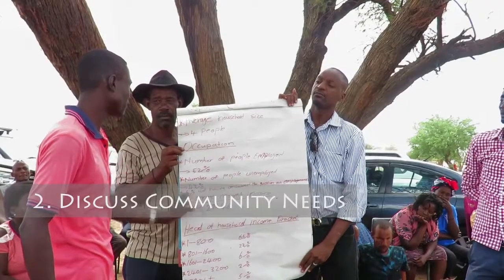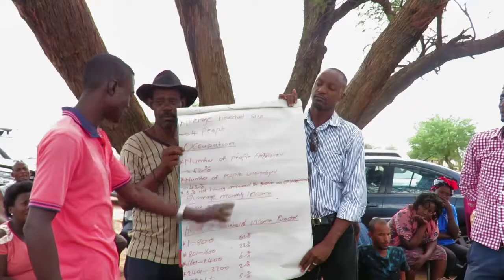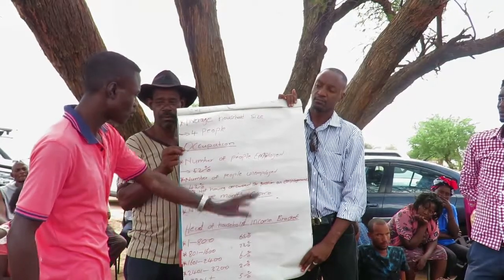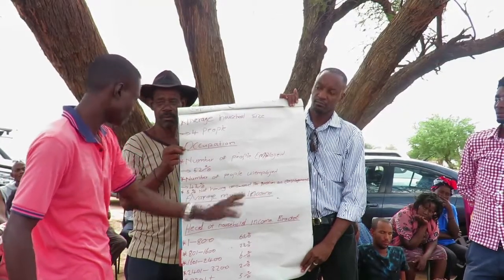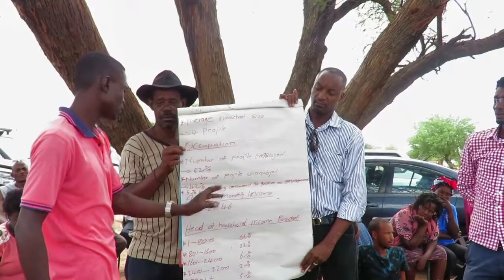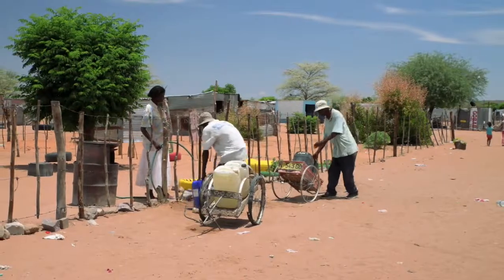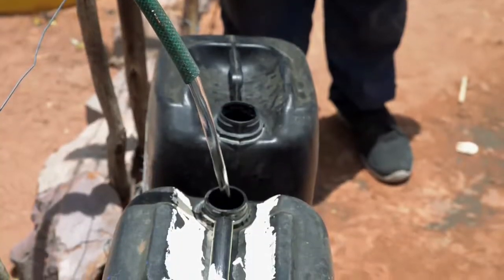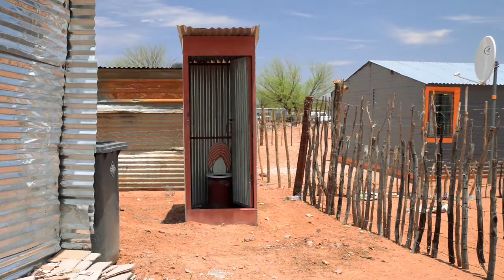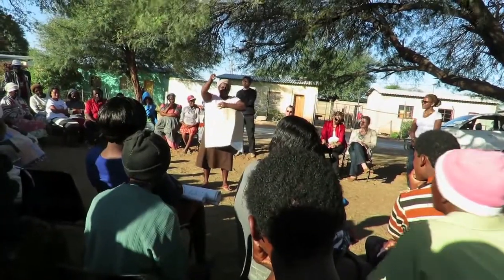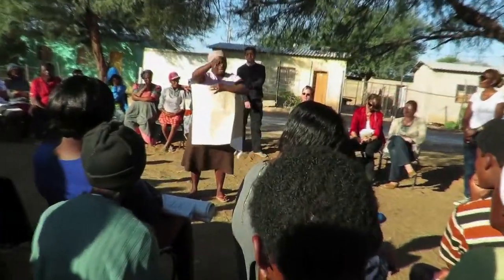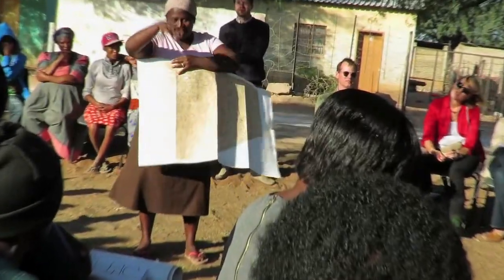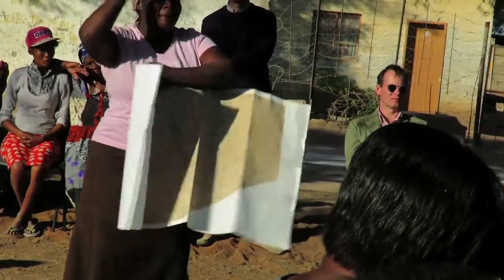Discuss community needs. In meetings with stakeholders, the community members presented and discussed their findings and priorities. In the case of Freedom Square, the community identified access to water as the first priority, followed by the need for toilet facilities. For this discussion, it is best to create a platform at which the community can share insights and interact comfortably. This doesn't have to be complicated — in our case, we met under a tree.